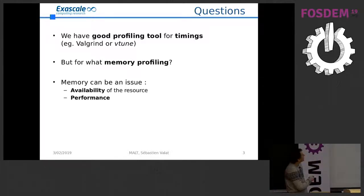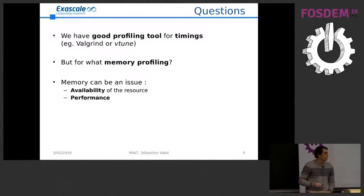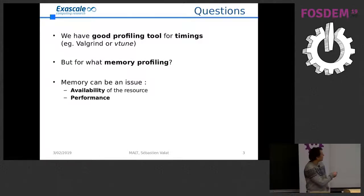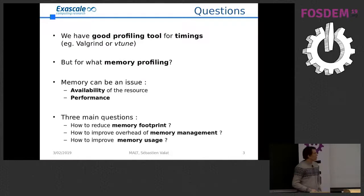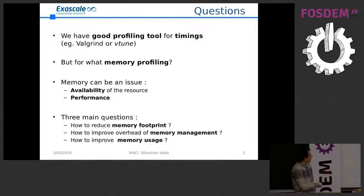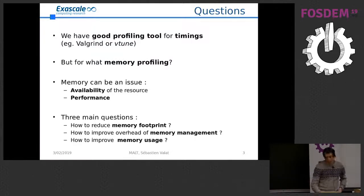Memory can be an issue for two things: first, the availability of the resource itself — if I consume too much memory, how can I reduce the consumption? This is not a big issue on a laptop with 16 gigabytes, but on servers and supercomputers it happens quickly. And second, performance — we have more memory to manage, putting more pressure on the operating system. So three questions we want to ask: how to reduce memory footprint, how to improve overhead of memory management, and how to improve memory layout.